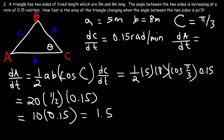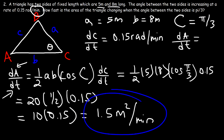Now what are the units? This is going to be in square units, and the lengths are in meters, so this is square meters per minute. So the area is changing at 1.5 square meters per minute. That means in 2 minutes it will increase by 3 square meters, and in 10 minutes it will increase by 15 square meters. So now you know how to find the rate at which the area is changing for a right triangle or any regular triangle. Thanks for watching.